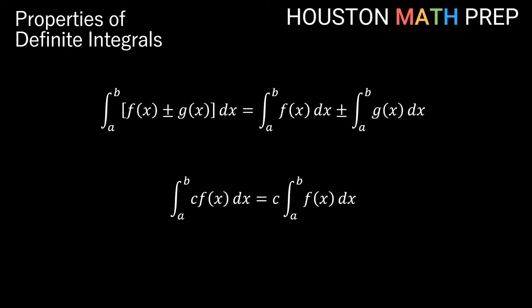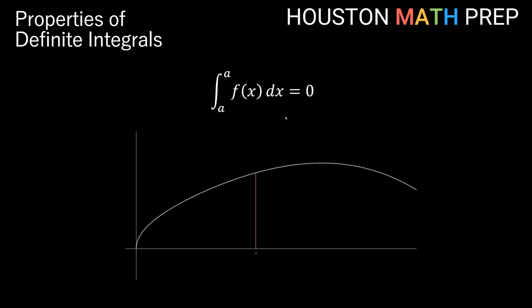Here's a property unique to definite integrals: the definite integral of some function where the lower and upper bound are the same x value equals zero. You can think of it as a region under the curve with no width, since the left side and right side of the integral are the same x value — so there is no area.